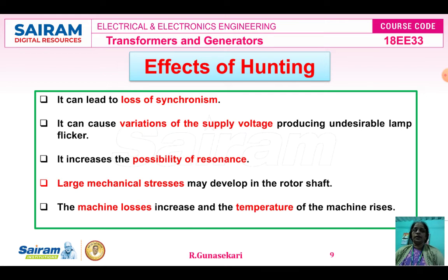Now the effects of hunting. The first effect is loss of synchronism. Synchronism means the generator is operating in parallel with another generator or with the bus bar. Loss of synchronism means we cannot synchronize the generator either with another generator or the bus bar because of the effect of hunting.